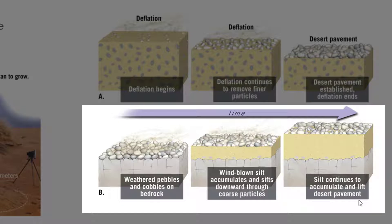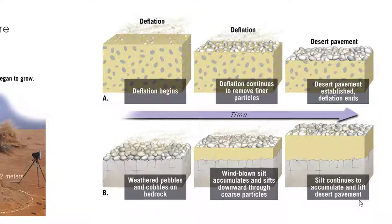Over time, those really fine sediment grains will settle into the cracks and pores in desert pavement, and they'll work their way to the very bottom. Once again, when enough time progresses, a lot of fine-grained sand particles will have accumulated under the larger desert pavement sediment pieces, and we see that the surface will be raised, given enough time.